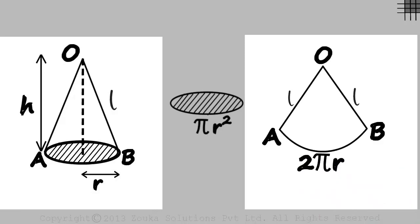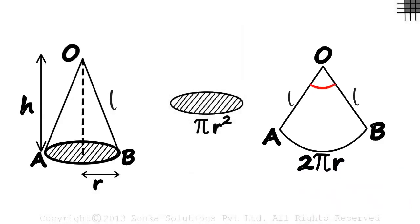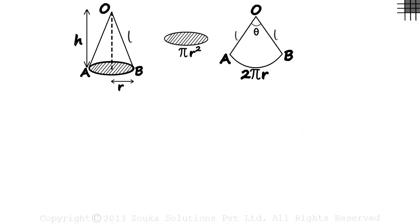A sector is also defined by the angle it subtends at the center. Let us call it theta. Now we are ready to find the area of the sector. And it gets even more interesting. There is another way in which we can find the length of the arc AB. Let's zoom out to look at the other way.